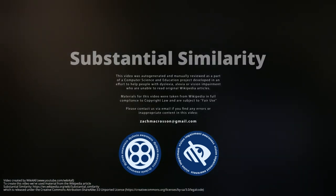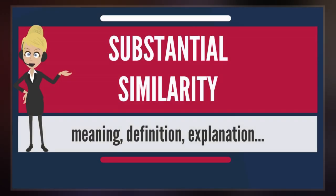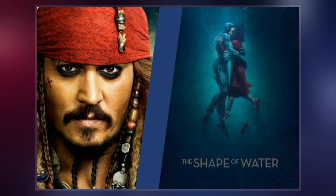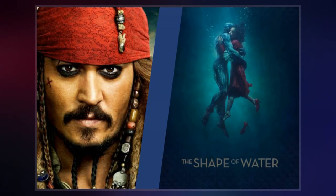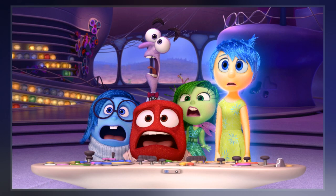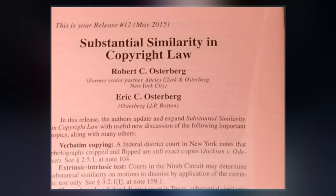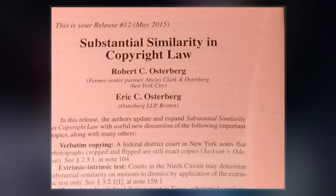Substantial similarity in U.S. copyright law is the standard used to determine whether a defendant has infringed the reproduction right of a copyright. The standard arises out of the recognition that the exclusive right to make copies of a work would be meaningless if copyright infringement were limited to making only exact and complete reproductions of a work. Many courts also use substantial similarity in place of probative or striking similarity to describe the level of similarity necessary to prove that copying has occurred.